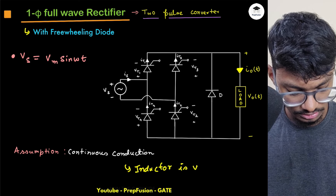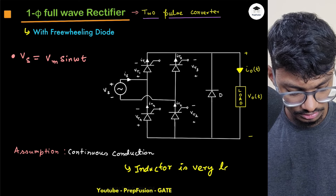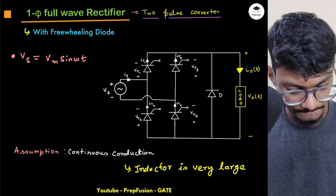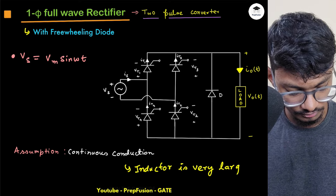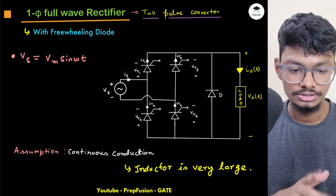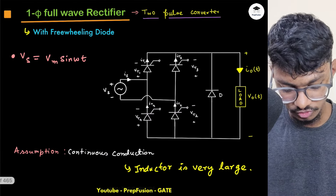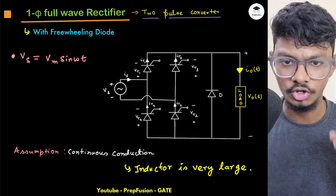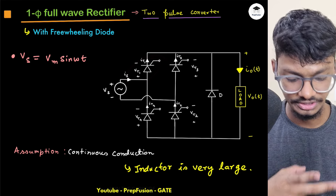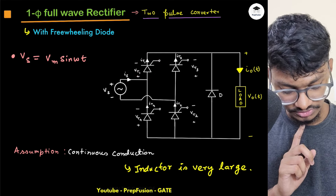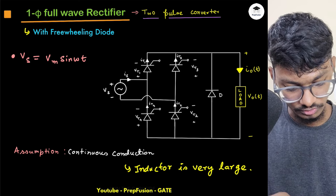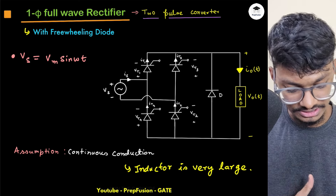For continuous conduction, the inductor is assumed to be very large. With a large inductor, it will keep the SCRs on. So before alpha is triggered, T1 and T2 are in forward blocking mode and T3, T4 are in reverse blocking mode.